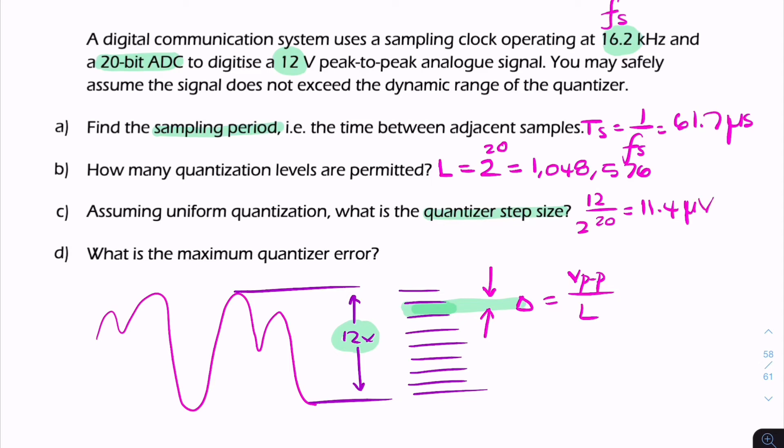Now, if each step size is 11.4 microvolts, what's the maximum quantizer error? The quantizer error can never be more than half of that for uniform quantizers, so it'll be 11.4 over 2, which is 5.7 microvolts.